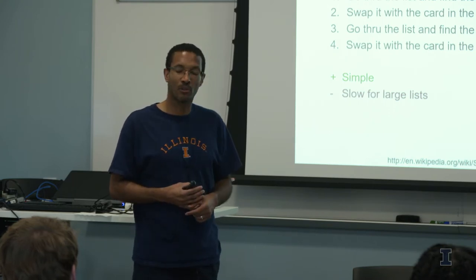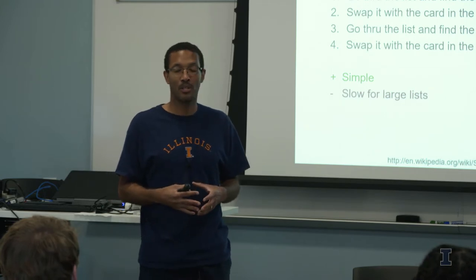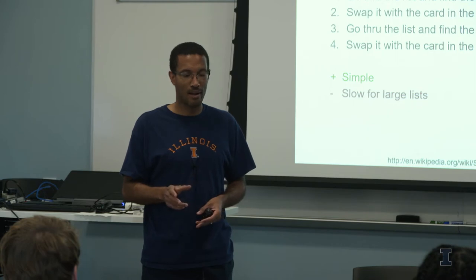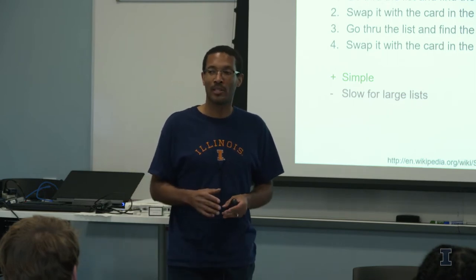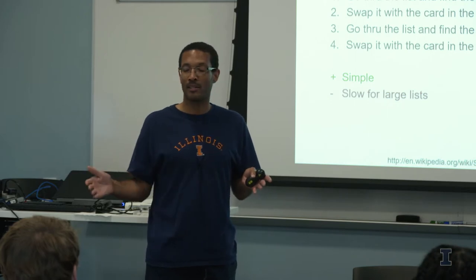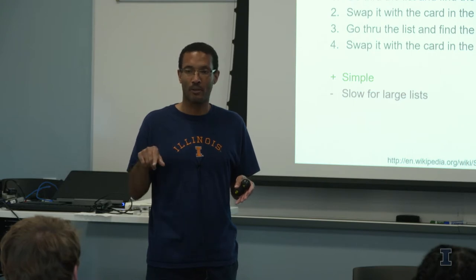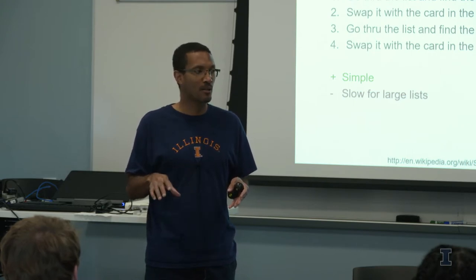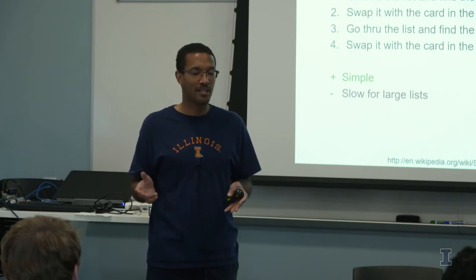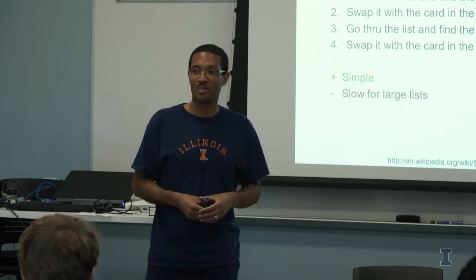Unfortunately, it's slow for large lists. There's something called order of notation. This algorithm is order of n-squared operations. That means if I double the length of the list, the amount of time it takes to sort is not double — it's double squared, so four times as long. Triple the list, it's nine times as long. Ten times longer list, a hundred times longer to sort.